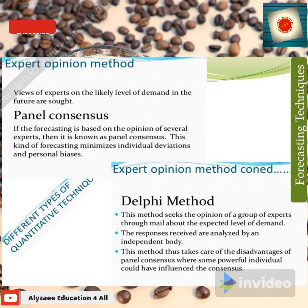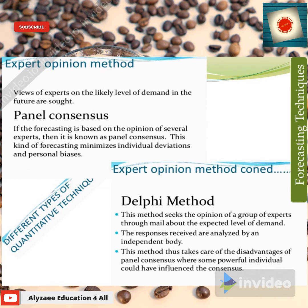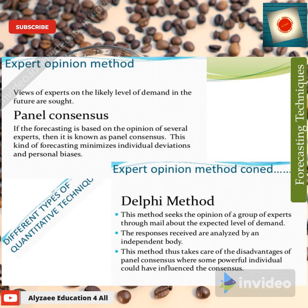In the Delphi method, the opinions of a group of experts are sought via email about the expected level of demand. You send queries to external partners or experts who are not present in the country — experts working in different universities and organizations abroad — and get their expert opinion. The responses received are analyzed by an independent body. This method takes care of the disadvantages of panel consensus, where some powerful individual could have influenced the outcome.